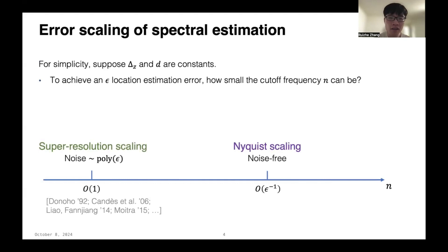This problem has been studied for a long time, since 1992, initiated by Donoho. This shows that if the noise is very small, like polynomially in the accuracy ε, then it's sufficient to take a constant cut-off frequency to achieve an ε estimation error. This is called the super-resolution scaling, because it is superior to the Nyquist scaling, derived from the famous Nyquist-Shannon sampling theorem, which says that it's sufficient to take n equals to 1 over ε for a noise-free signal.